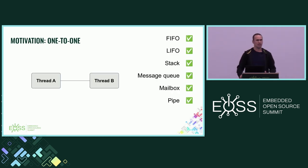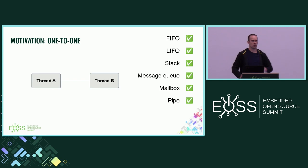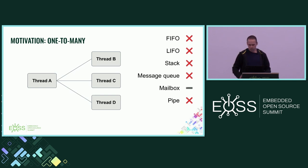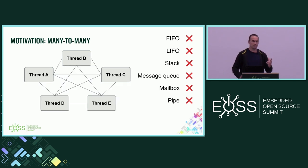I'm going to start with why ZBus. We started ZBus because one-to-one communication is easy — we have a lot of kernel objects and tools that enable that. But when we start thinking in a more complex way, for example one-to-many, we don't have many options. We just have mailbox and you need to do a lot of manual things to make that work. And even many-to-many communication is really hard — you'd need a lot of queues or FIFOs.